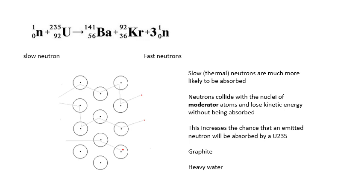The moderator does a very important job: it slows down neutrons. To get the fission reaction going, a neutron must be absorbed, and that absorption is much more likely if the neutron is travelling slowly. However, the fission event itself is explosive — the three neutrons emitted travel very fast and are unlikely to be absorbed, so they need to be slowed down. The neutrons collide with the nuclei of the moderator.